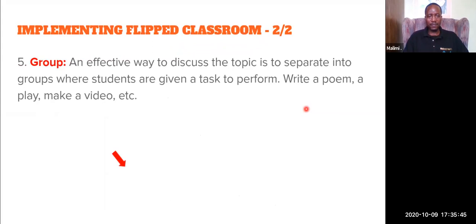Step five: group. An effective way to make discussion interesting and effective is to group your students in small groups so that they can have engaging discussion of the content. This can be done in class and also even before class. You can give them activities depending on what you're teaching — it can be a writing activity, creating something, making a video, or solving a problem.